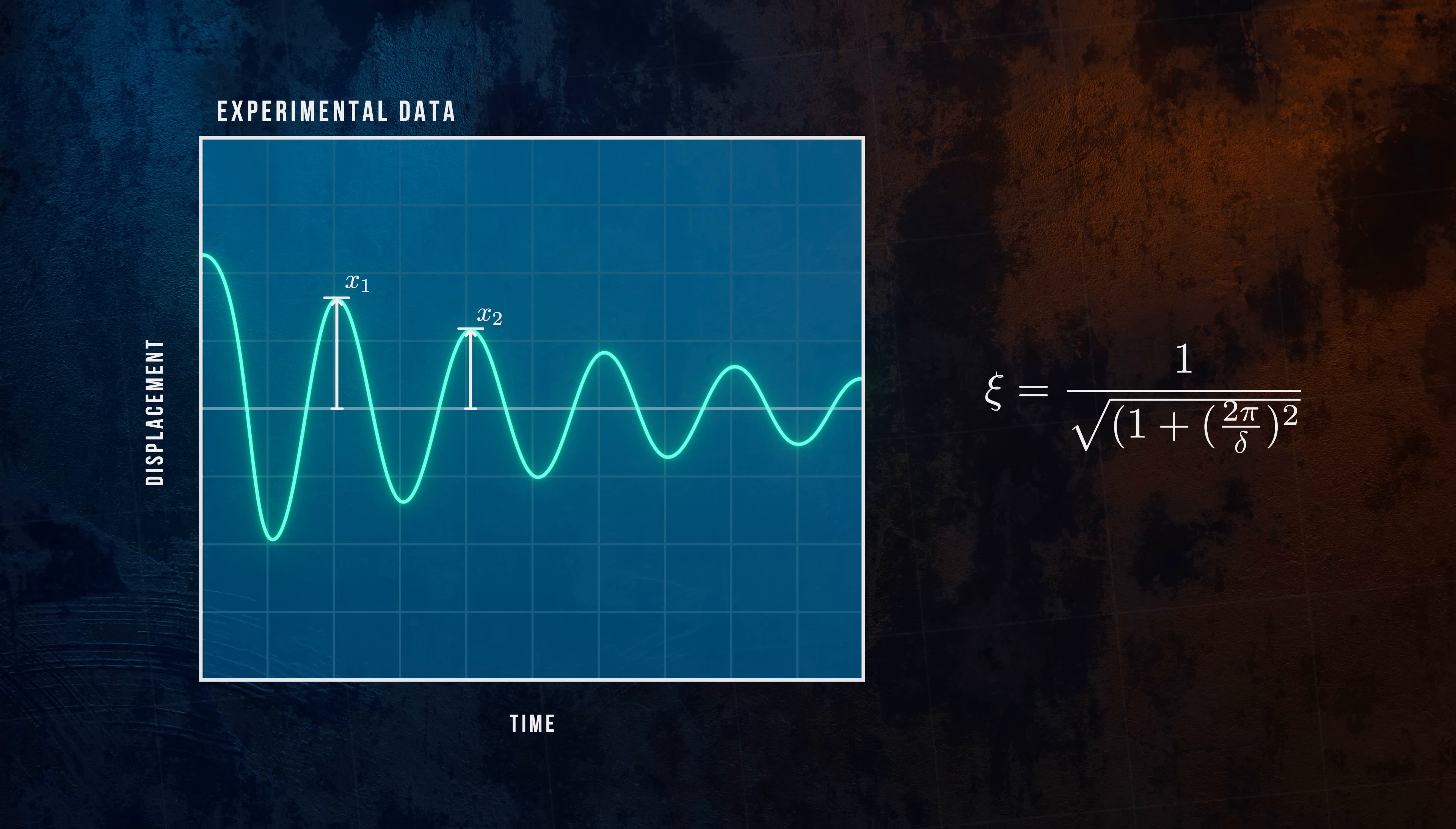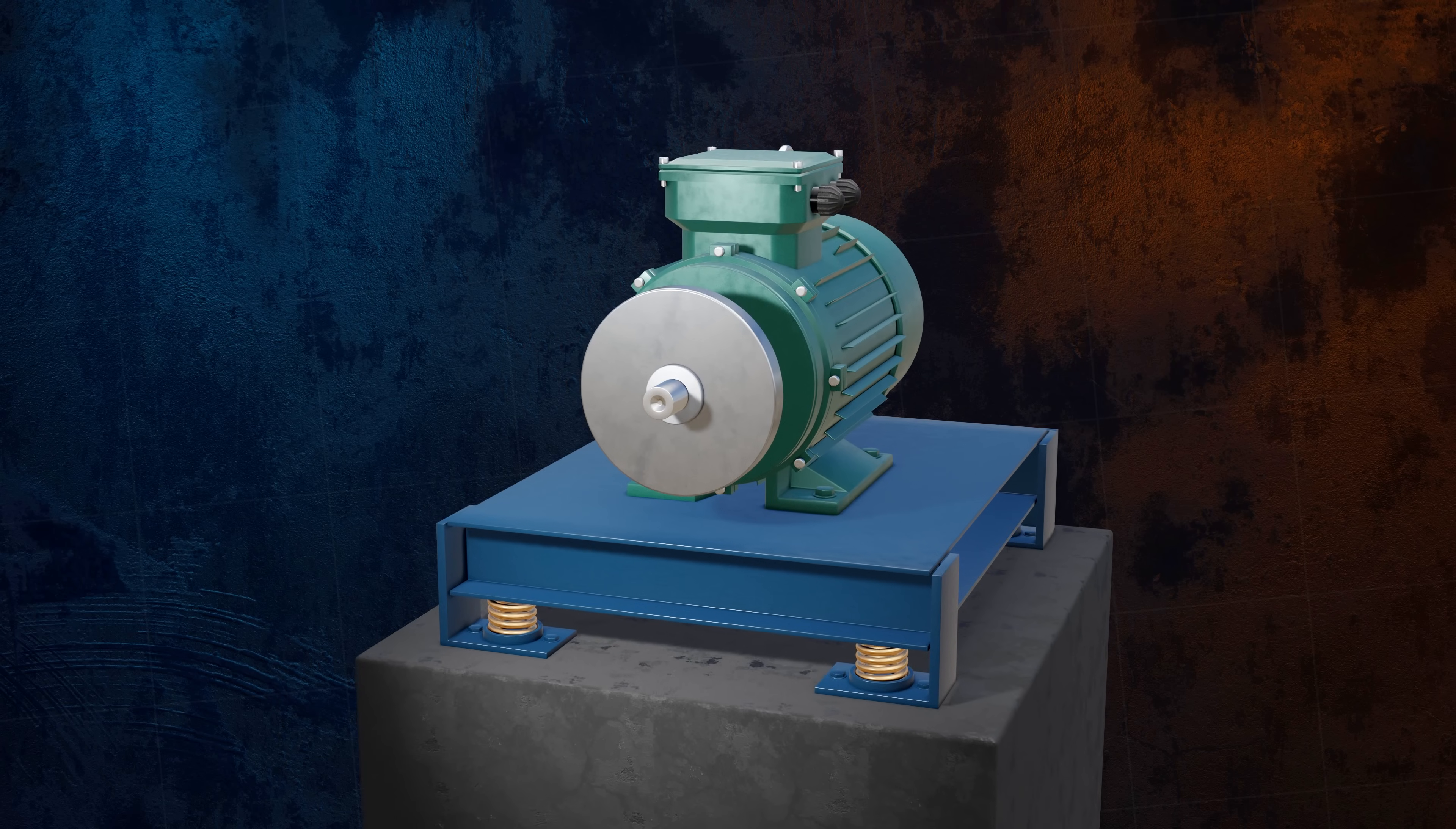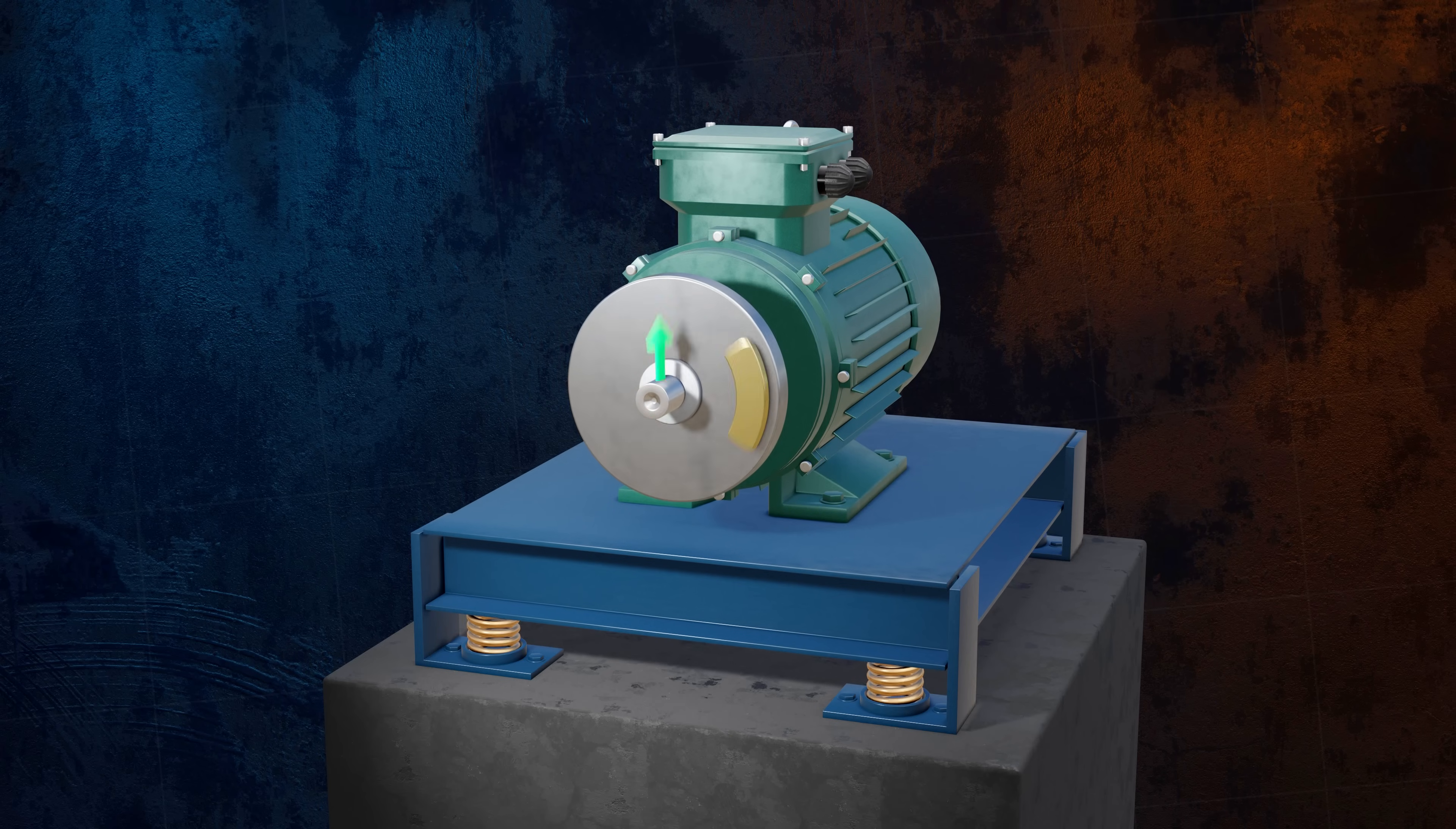So far we've looked at free vibration, where oscillation is only caused by the initial conditions, but another scenario is forced vibration, where oscillation is driven by an external force. This type of loading often occurs in rotating machinery. A common problem with turbines and motors occurs when a rotating component is unbalanced, meaning that its mass is unevenly distributed. This introduces a load that has a sinusoidal component in the vertical direction and can cause vibration.